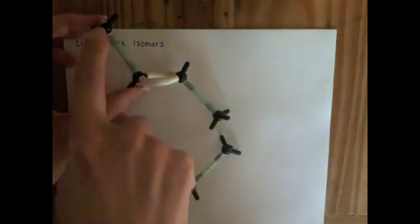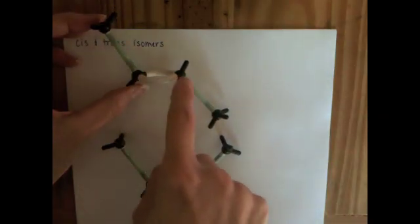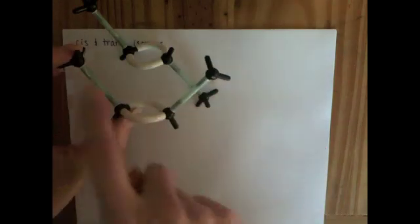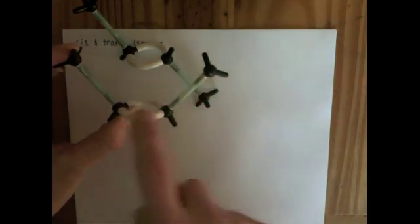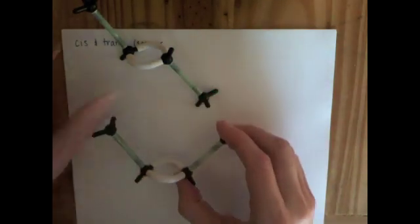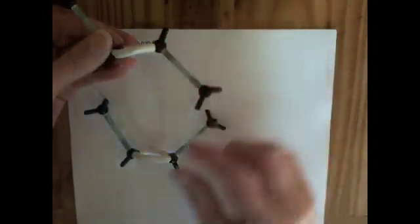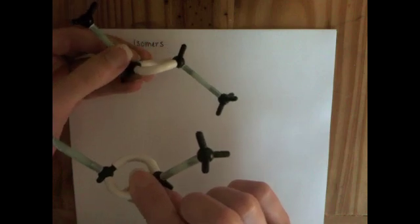In this particular molecule, the atoms are arranged in kind of a zigzag pattern across the carbon-carbon double bond. In this molecule, the atoms are arranged in more of a U-shaped pattern across the double bond. These two molecules are not identical. You can't rotate this particular model to end up with the structure that looks like this.